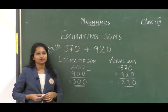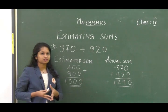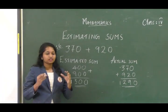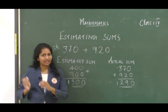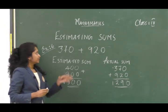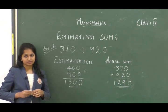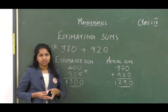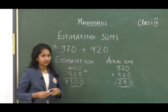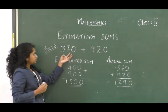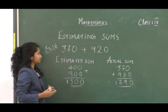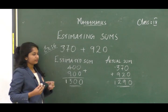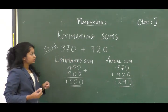Let us move on to our last topic — estimating sums. Do you know what estimation is? Estimation is not the exact value but is approximate to the actual value. It is not always possible to calculate the actual value, so we do some estimation. Here is a question from example 6: a basket contains 370 apples and another basket contains 920 apples — how many apples are there in total? Let us calculate the estimated sum. 370 is in the hundreds, so we round off to 400 by checking the tens place.